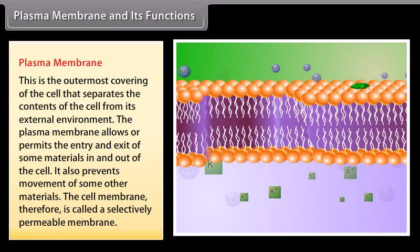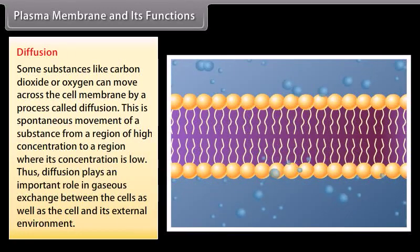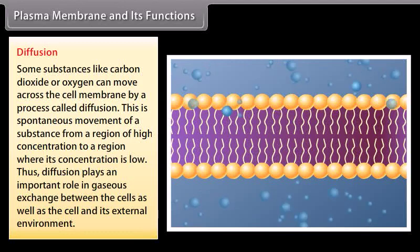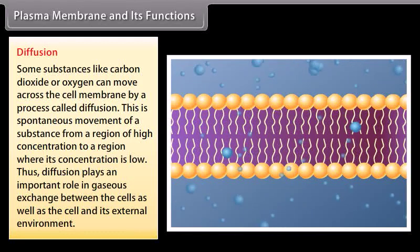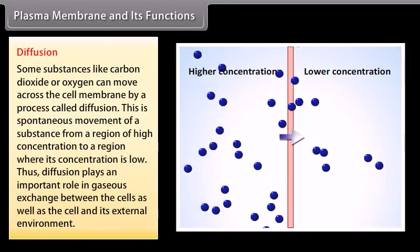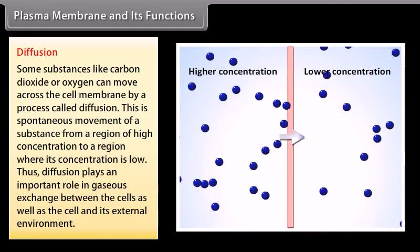The plasma membrane allows or permits the entry or exit of some materials in and out of the cell, while preventing the movement of some other materials. The cell membrane is therefore called a selectively permeable membrane. Substances like carbon dioxide or oxygen can move across the cell membrane by a process called diffusion — the spontaneous movement of a substance from a region of high concentration to a region of low concentration. Diffusion plays an important role in gaseous exchange between cells and their external environment.